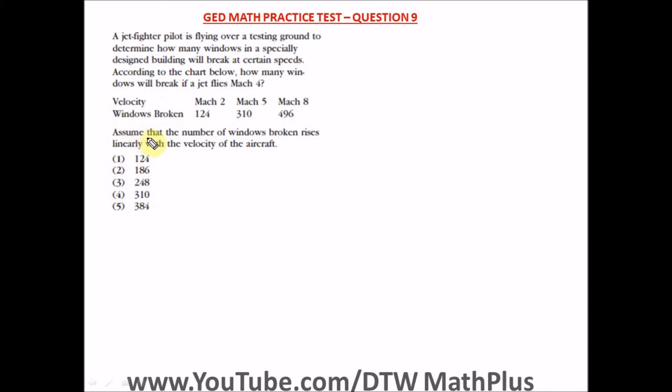We have this chart here. It also says assume that the number of windows broken rises linearly with the velocity of the aircraft. So we have to assume that the number of windows broken rises linearly with the velocity of the aircraft. Linearly means as the velocity increases, the number of windows broken also increases.